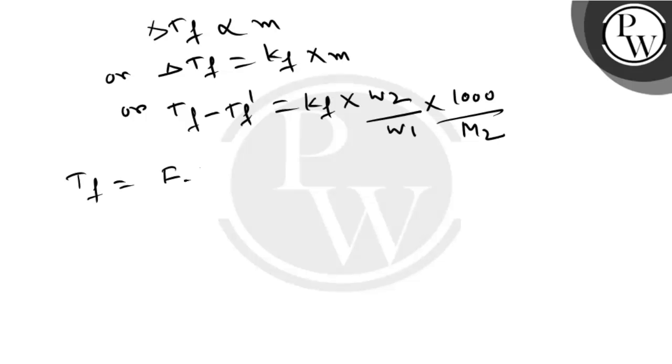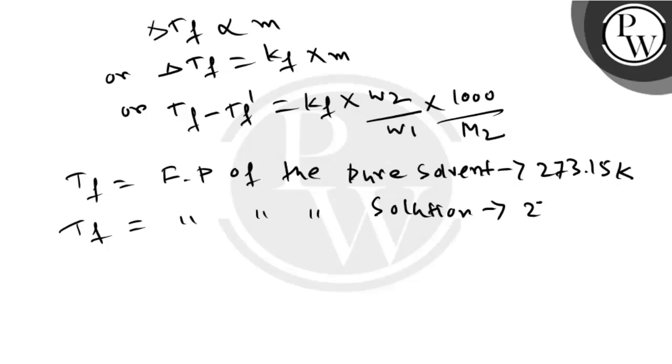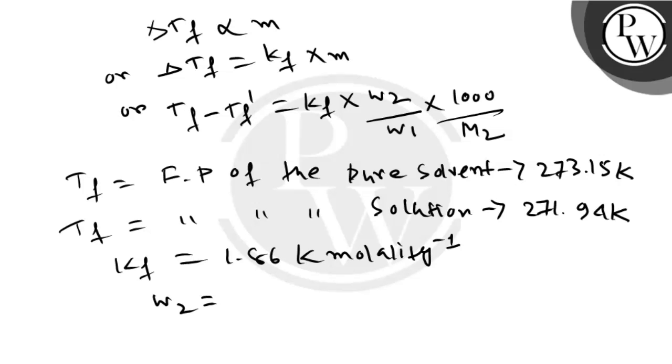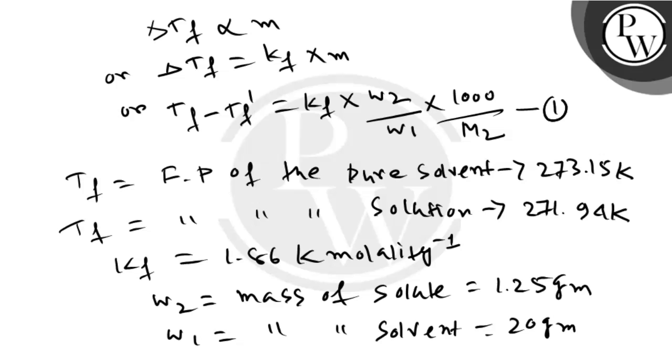Tf is the freezing point of the pure solvent. In this case, this is water which is 273.15 Kelvin. Tf dash is the freezing point of the solution, which is 271.94 Kelvin. Kf is equal to 1.86 Kelvin molality inverse. W2 is equal to mass of solute, which is 1.25 gram. W1 is mass of solvent, which is 20 gram. And let this be equation 1.